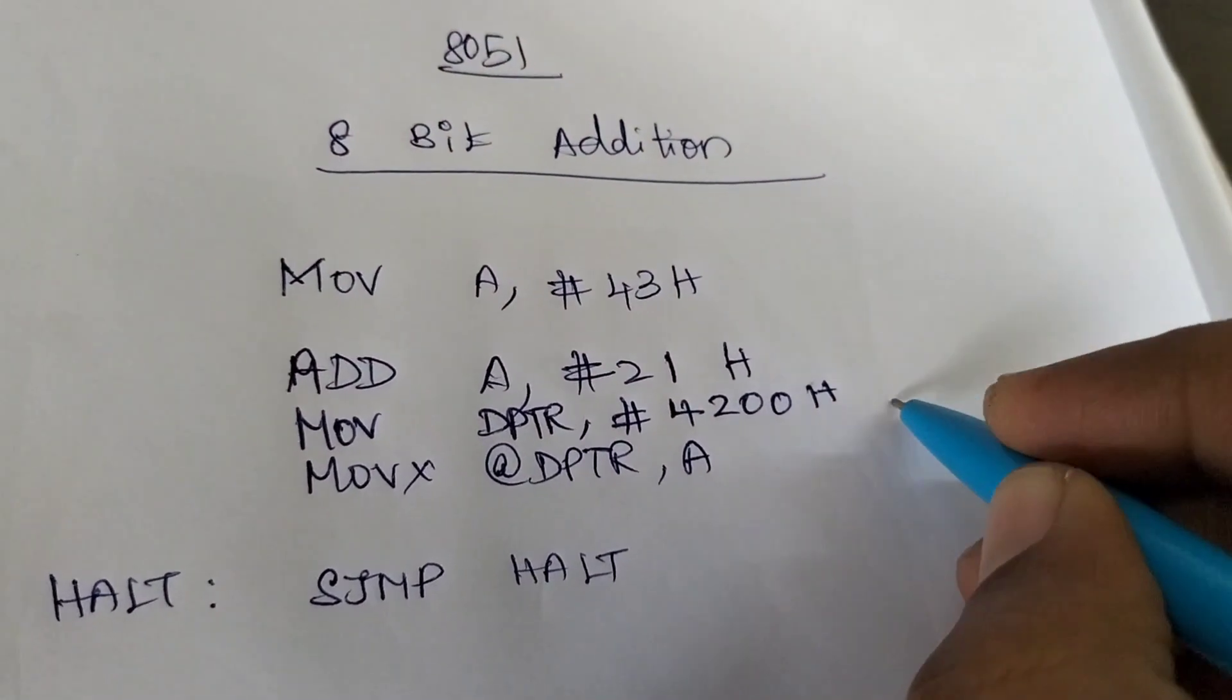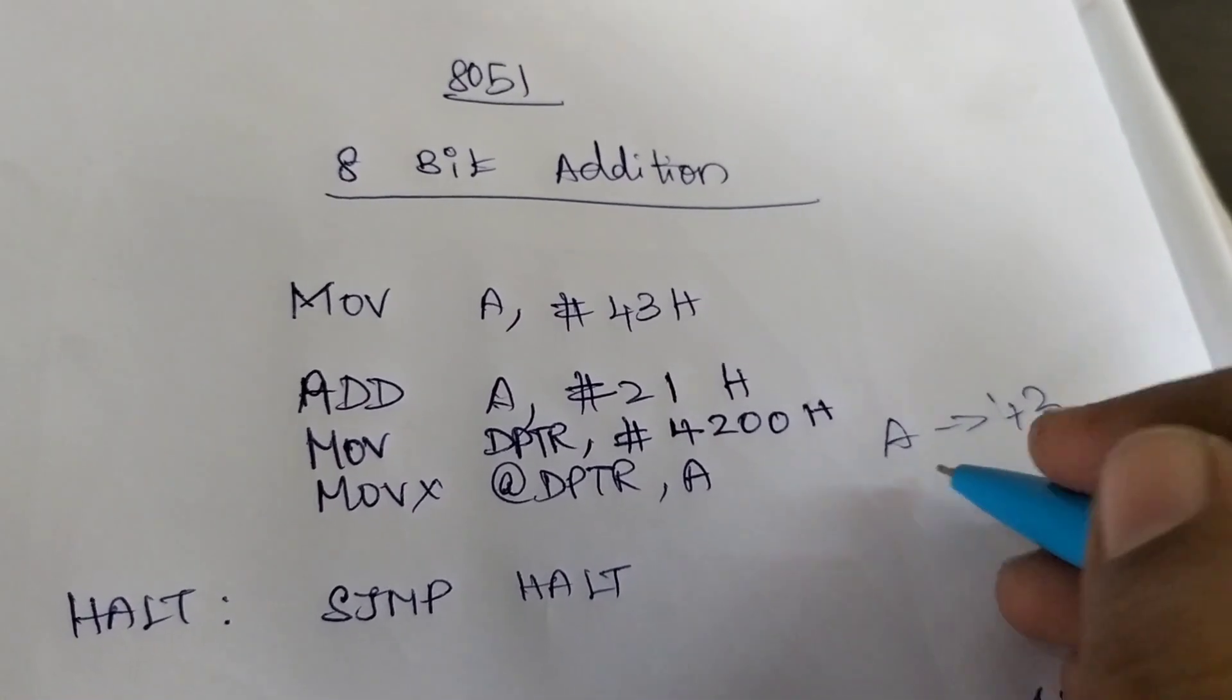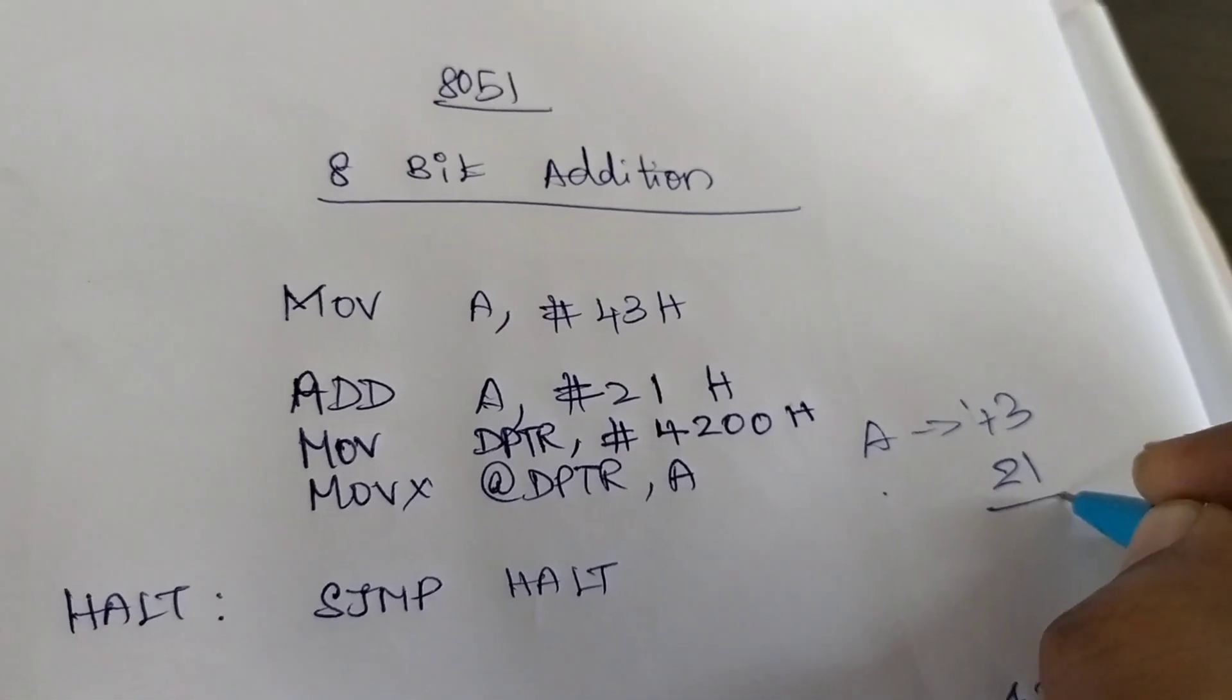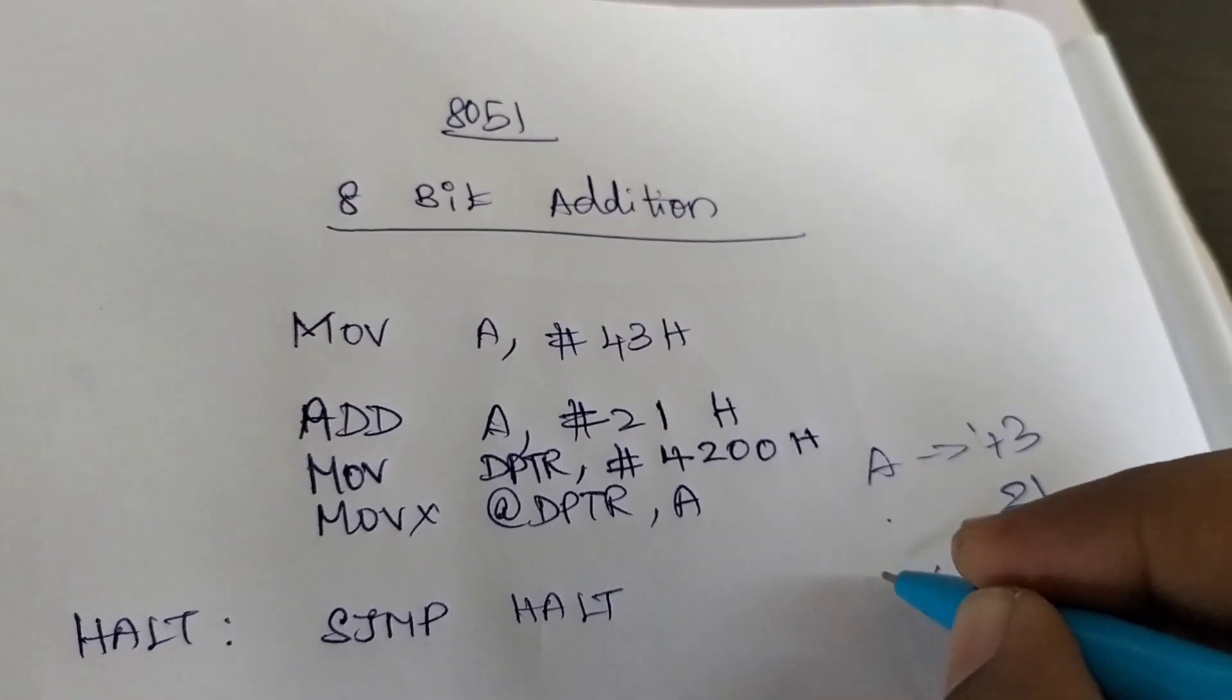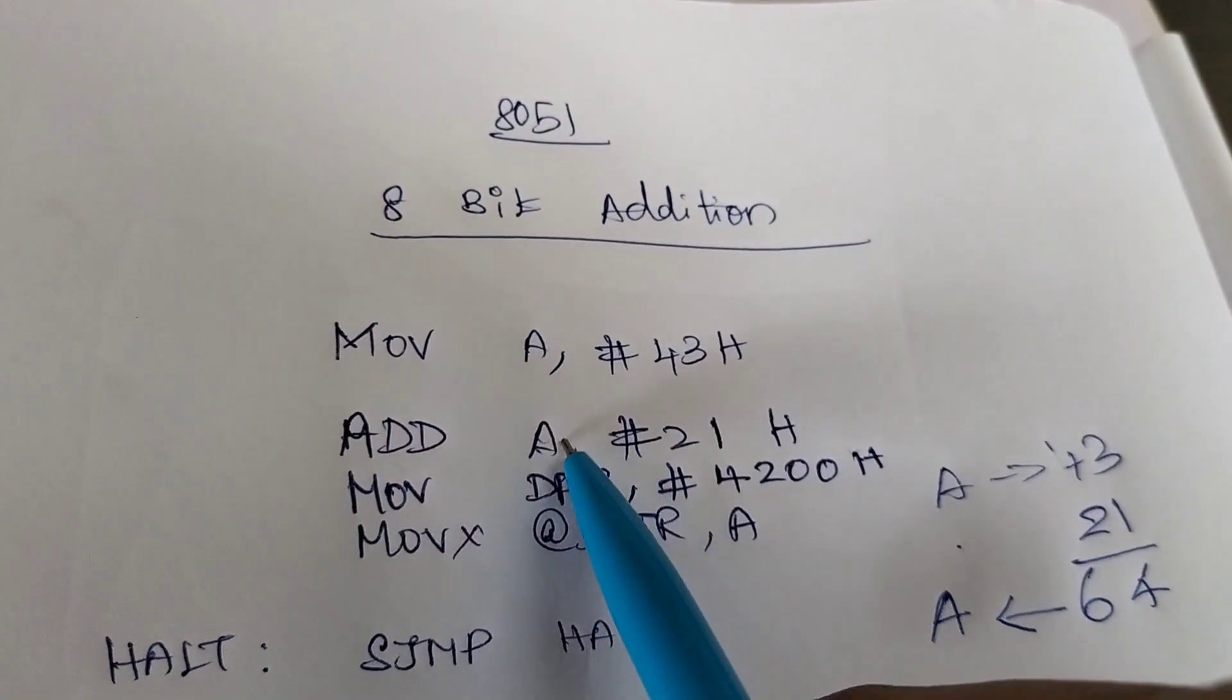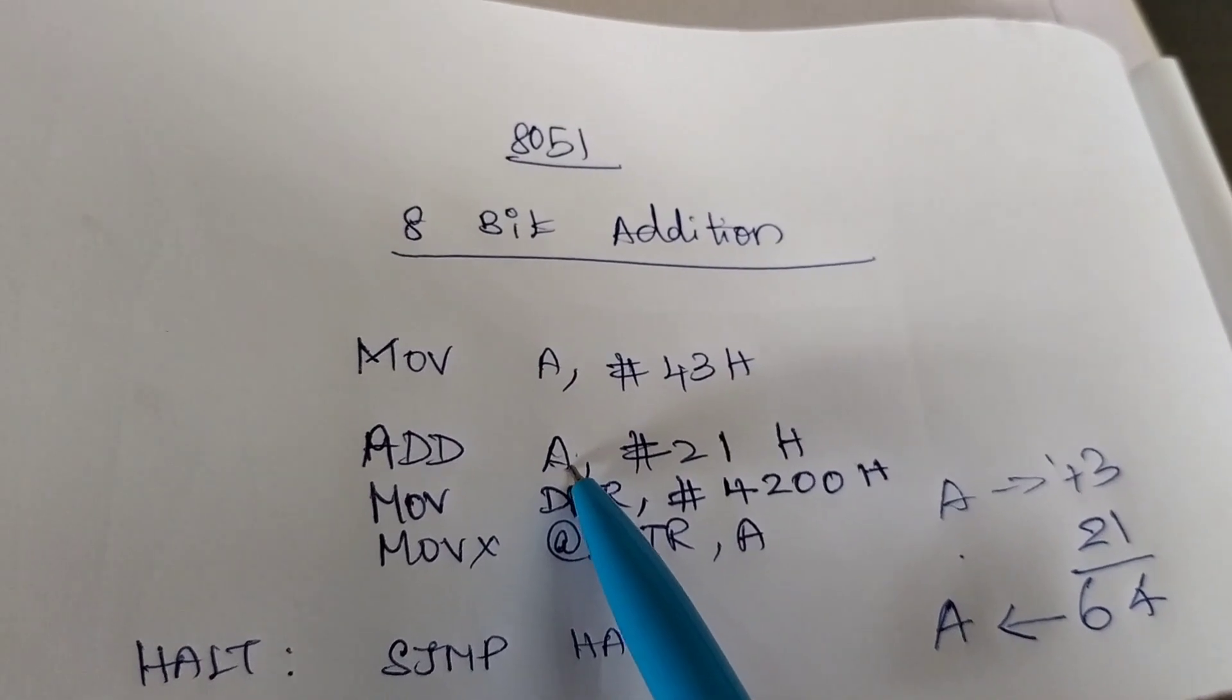So for example, we have already A value as 43 and now the another data is 21. So both will be added. So what is the value? It is 64. So now this result will be stored in the A register. So addition operation will add both the datas and the result will be stored in the A register.